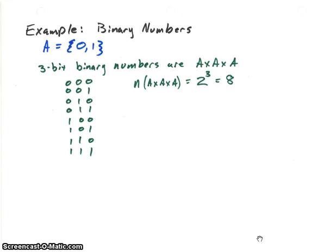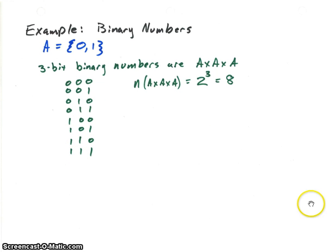Another example of a cross product set is binary numbers. The set we're dealing with is just {0, 1}. To get binary numbers, we just do repeated cross products of A. For three-bit binary numbers, we would have A cross A cross A. Order matters because (0, 1, 1) is different from (1, 1, 0). As you know, with three-bit binary numbers, the total count is 2 to the power of 3, or 8.